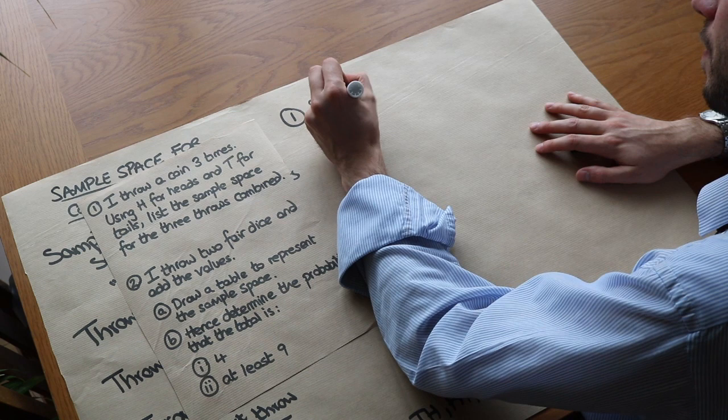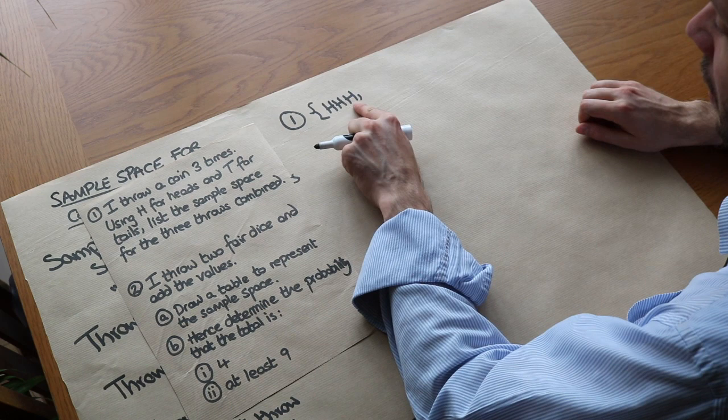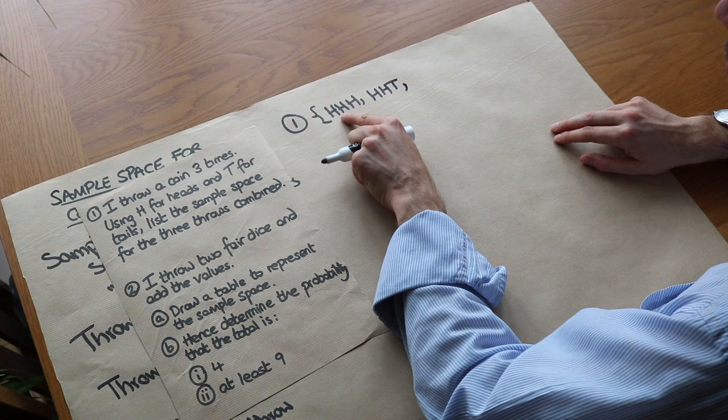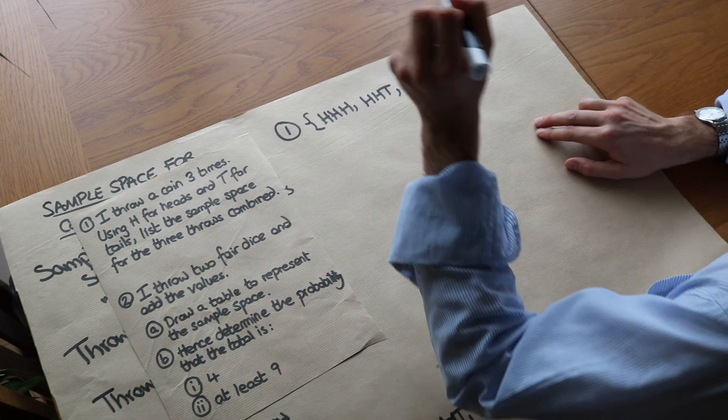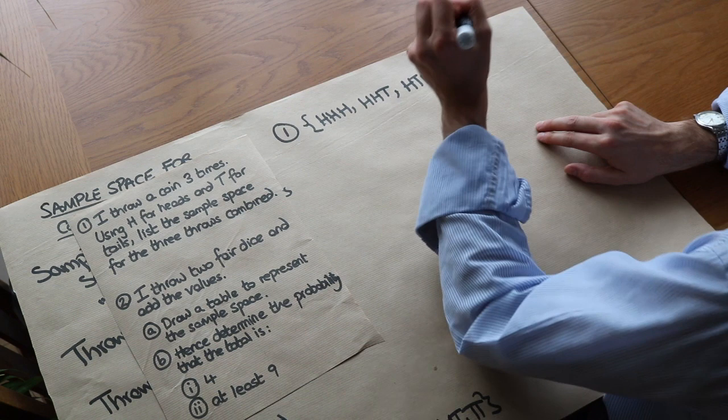So we've got heads, heads and tails as well. Now I've exhausted all the ways we could have heads, heads. So let's change the second one now. We could have heads, tails. And then we could either have a third heads, or we could have the third one being tails. So we get those ones. Now we've exhausted all the ones where we start with head, so now we go into all the tails ones.